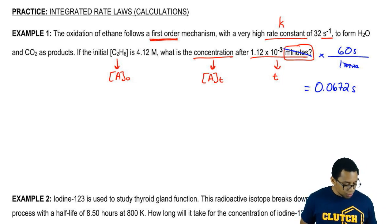Now, we're dealing with first order, so that means we're going to use the first order integrated rate law. LN of AT equals negative KT plus LN of AL.